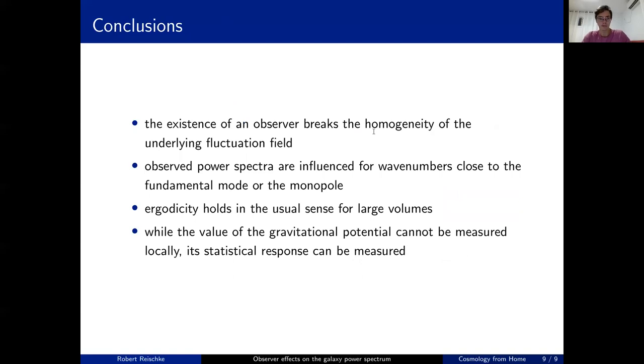I will come to the conclusions now. What we did is we studied the impact of a particular point in the universe on the values cosmological fields had at our place on the statistics of these cosmological fields. The existence of an observer breaks the homogeneity of the underlying fluctuation field because it's constrained to have a single value at our position. Then, due to the correlations, you get a radial dependence of the statistics which depends explicitly on which radius you take in this direction and which one you take in that direction.